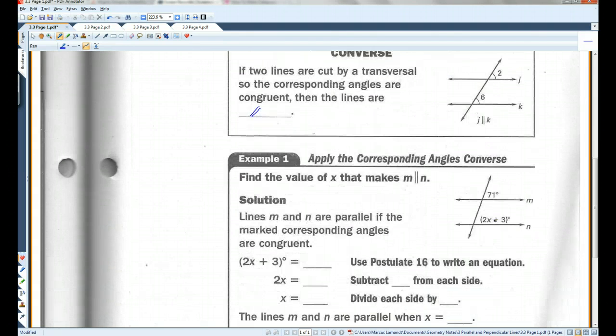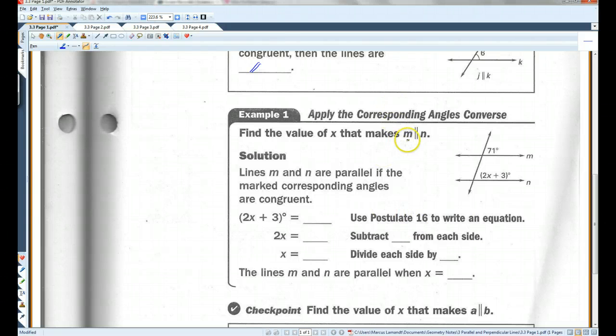So, for example, find the value of x that makes line m parallel to line n. So, if these lines are parallel, then this angle and this angle have to be congruent because of their corresponding angles, which means that 2x plus 3 has to equal 71 degrees. That's postulate 16.